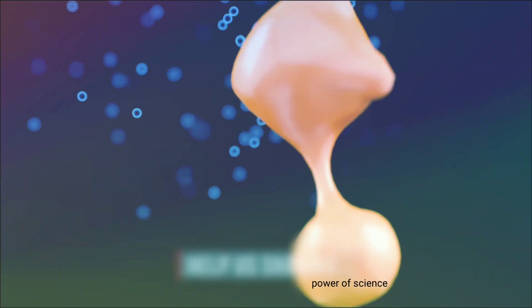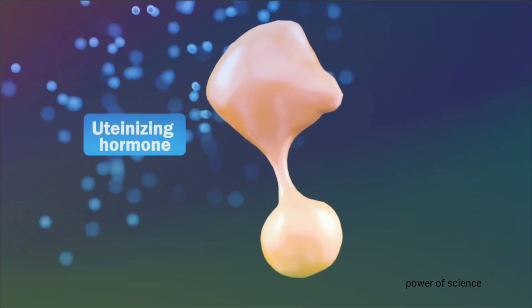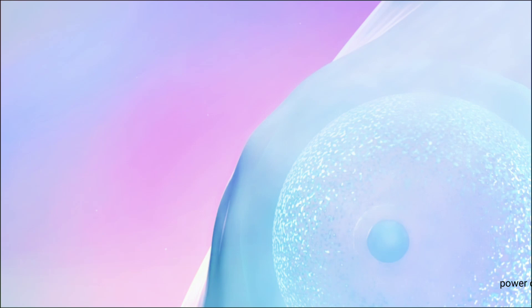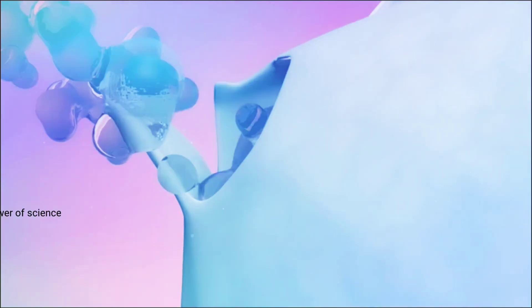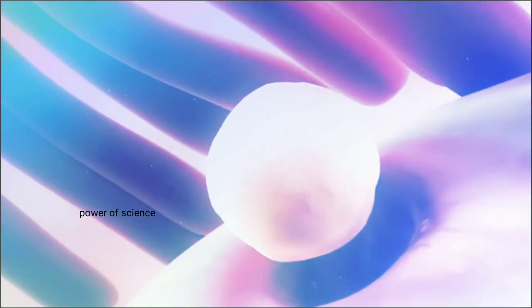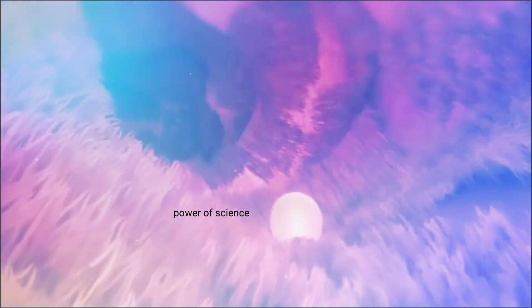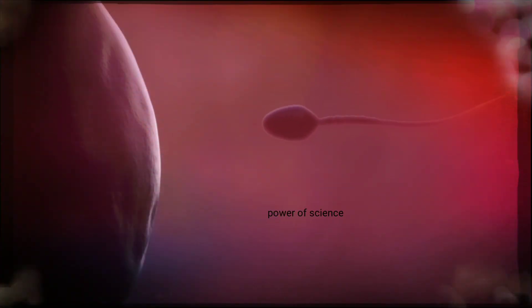Number three: Ovulation. When 13 days of follicular phase are completed, the pituitary gland in the brain secretes luteinizing hormones, due to which the egg present in the ovary is released by the rupture of the follicle. After the egg is released, it enters the fallopian tube. It waits for about 24 hours to be fertilized with sperm.